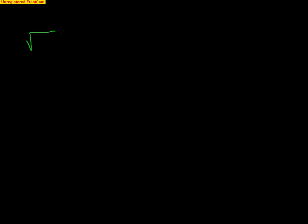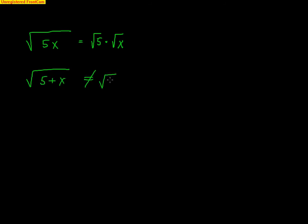Next are some very common mistakes with square roots. Remember, the square root of 5X can be written as the square root of 5 times the square root of X — multiplication inside a square root can be broken up. But if it were 5 plus X, this is not equal to the square root of 5 plus the square root of X. The quantity (5 plus X) are two terms separated by a plus sign, and they cannot be split under the radical.